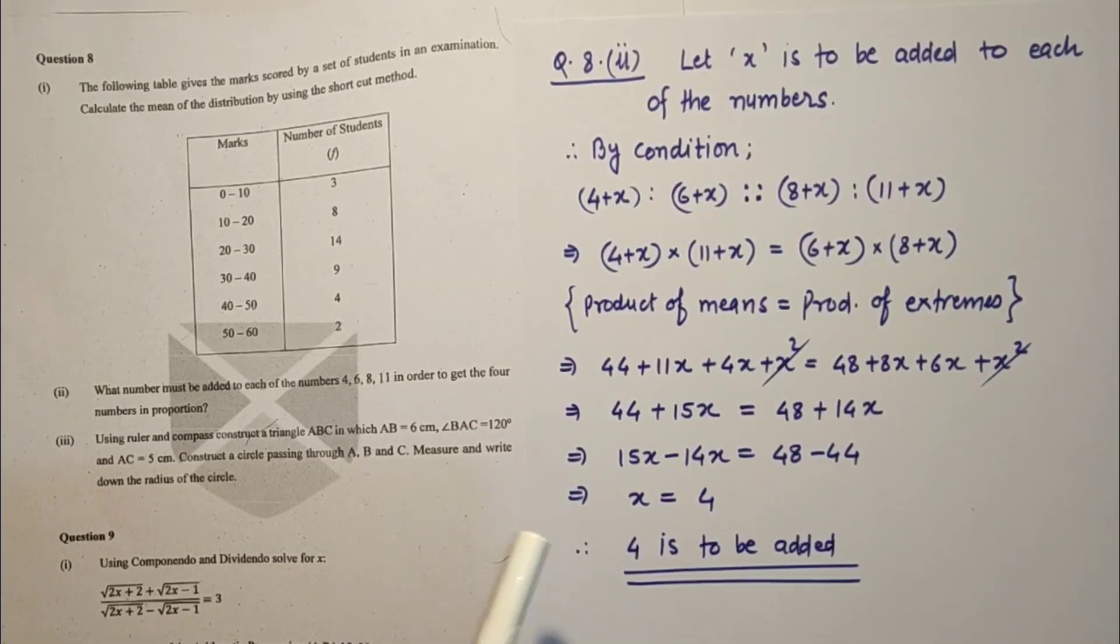Question number 8 second sub part. What number must be added to each number to get in proportion? These are the steps. Product of means equals product of extremes. After simplification, answer is 4 is to be added in each of the numbers given to get in proportion.